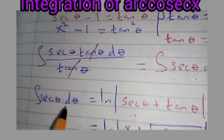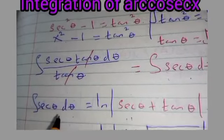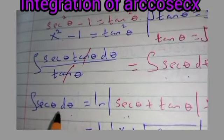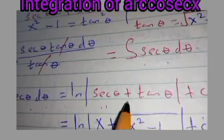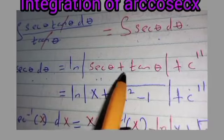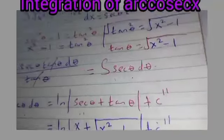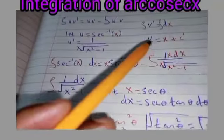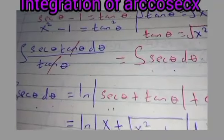I have also shown how to integrate sec θ dθ — you can check my channel. Here I have provided the result directly, which is the natural logarithm of the modulus of sec θ plus tan θ, plus a constant c'' — I'm calling it c'' because we already have another constant from integrating v.